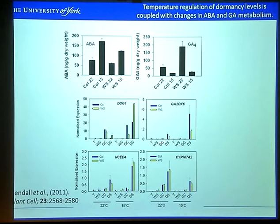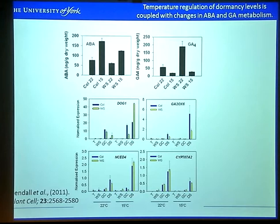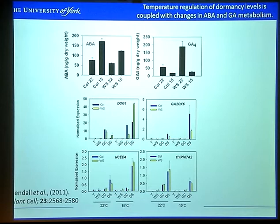We can also show that this corresponds with changes in gene expression involved with hormone metabolism. This is a developmental time course — torpedo, walking stick, green cotyledon and dry seed — staged this way because the actual developmental time differs when maturing seeds at 22 versus 15 degrees. You can see an increase in GA2OX6 expression in seeds matured at low temperature, and also an increase in NCD4 expression. In CYP707A2, we see the opposite effect — a decrease in expression — going along with higher ABA and lower GA levels in the low temperature matured seeds.